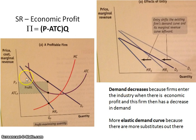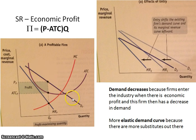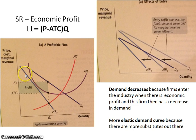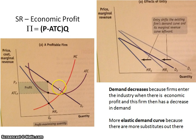This is your monopolistically competitive graph. Notice it looks very similar to the monopoly graph. You've got your downward sloping demand curve, which equals average revenue and price. You have your marginal revenue curve below the demand curve. You've got your marginal cost curve that looks like the Nike swoosh, and where it intersects the ATC is at its minimum, or productive efficiency.